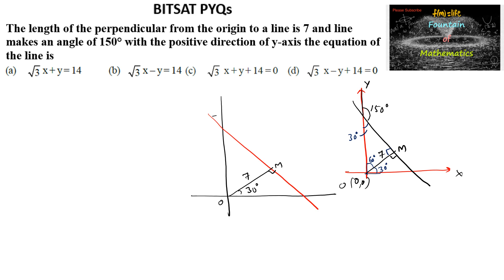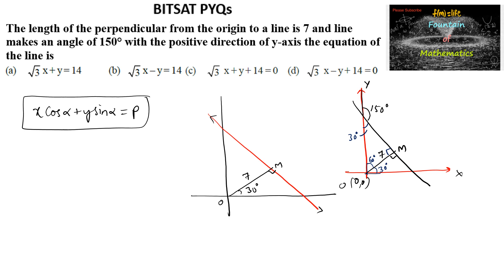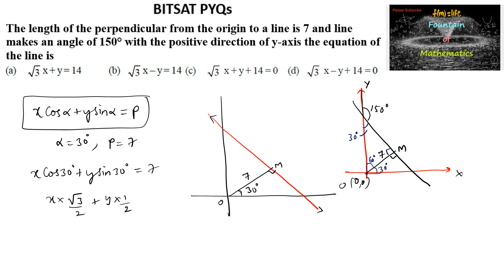The equation of the line is given by x·cos α + y·sin α = p, where p is the perpendicular distance from the origin and α is the inclination of the perpendicular. Here α = 30° and p = 7. So we write x·cos30° + y·sin30° = 7, giving x·(√3/2) + y·(1/2) = 7, which simplifies to √3x + y = 14.